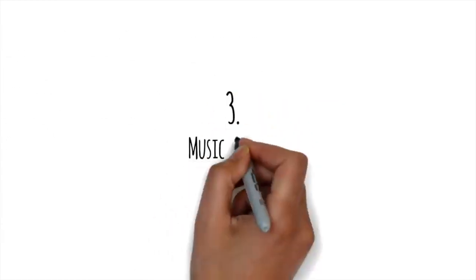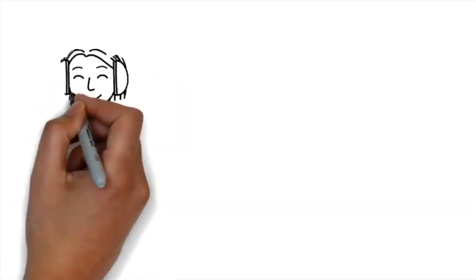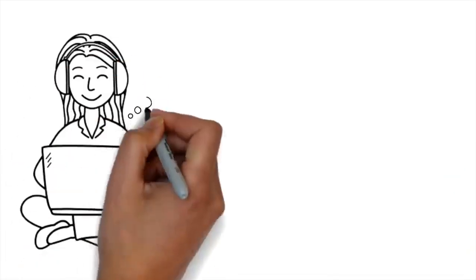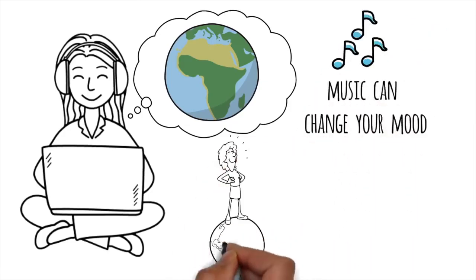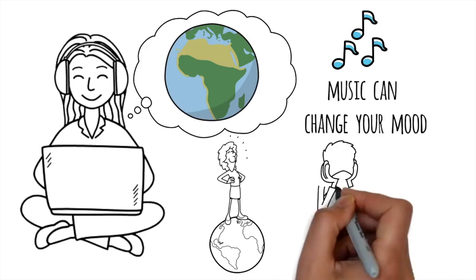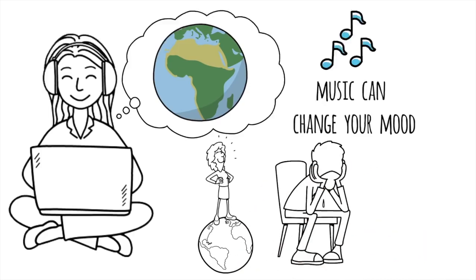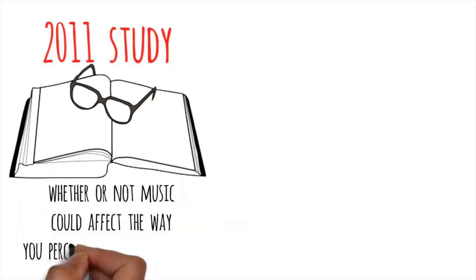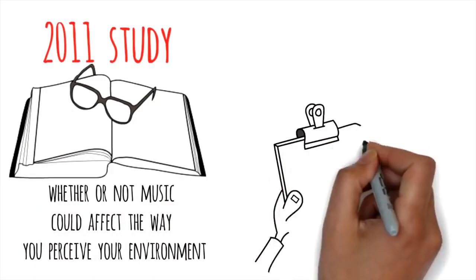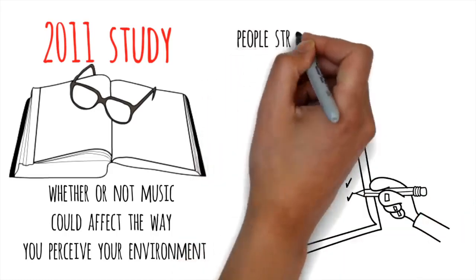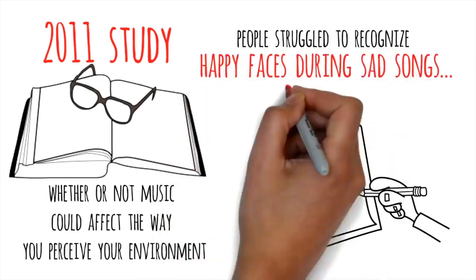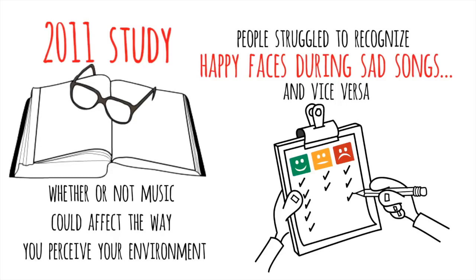Number 3. Music changes perception. The type of music you listen to actually affects how you view the world around you. We all know that music can change your mood. An upbeat song can leave you feeling on top of the world, while a sad one can send you into a downward spiral. But that's not all. A 2011 study looked at whether or not music could affect the way you perceive your environment. Subjects were asked to identify happy and sad faces while different songs played. Turns out, people struggled to recognize happy faces during sad songs and vice versa.